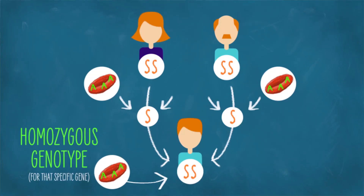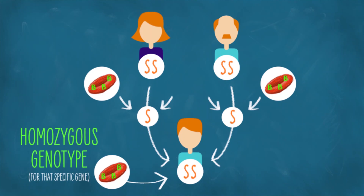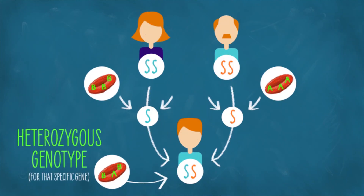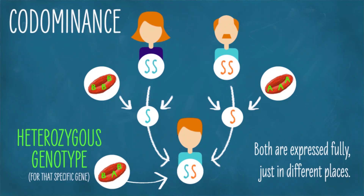But that isn't the only way both alleles could be expressed in the phenotype — both of them could be expressed completely. However, if they do different things and are both expressed completely, it is impossible that they could both be expressed in the same places. Looking at blood cells, this is what is going on with A and B blood types. People homozygous for A blood type have A antigens on the surface of their blood cells; people homozygous for B have B antigens. But heterozygotes have some A antigens and some B antigens — both are expressed fully, just in different places. They don't blend; they are both expressed fully, just not in the same place. This is called co-dominance.